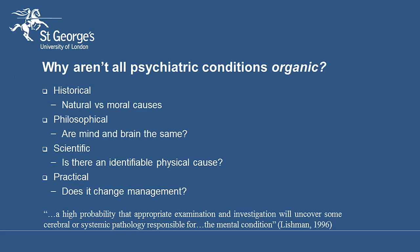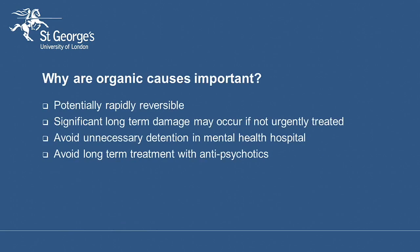Lishman, who wrote the definitive textbook on organic psychiatry, offered this as a working definition for organic psychiatric conditions. He said that there is a high probability that appropriate examination and investigation will uncover some cerebral or systemic pathology that's responsible for the mental condition. Why are organic causes important? They're at the very top of our diagnostic pyramid because they're potentially rapidly reversible with appropriate medical care. When patients are misdiagnosed, there may be significant long-term damage — for example, with encephalitis, if this is missed, then there can be long-term brain damage. Patients who are misdiagnosed may end up being detained in a mental health hospital and being given long-term treatment with antipsychotics, with significant consequences both for the patient and for society.